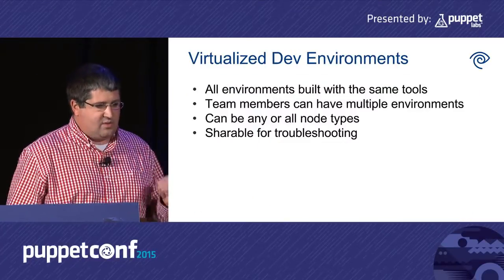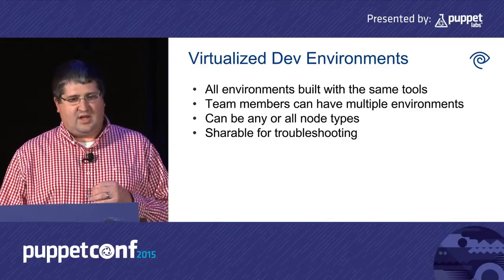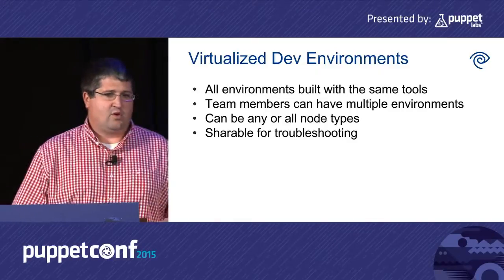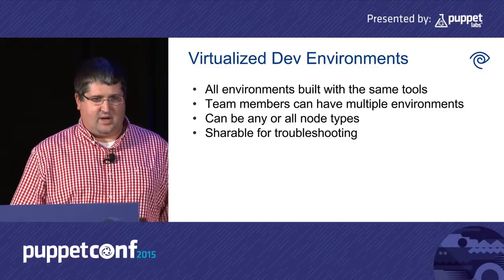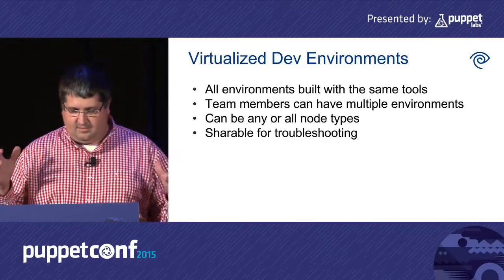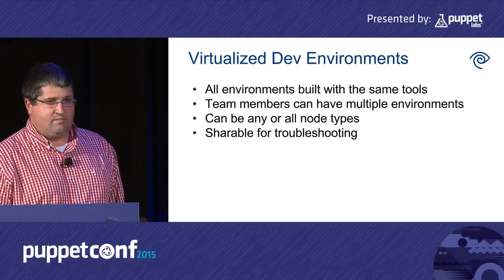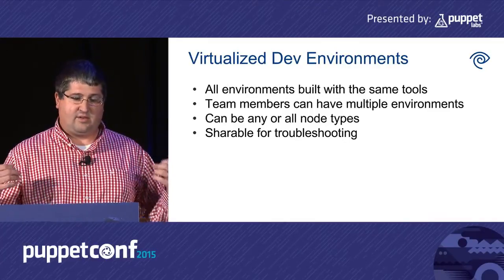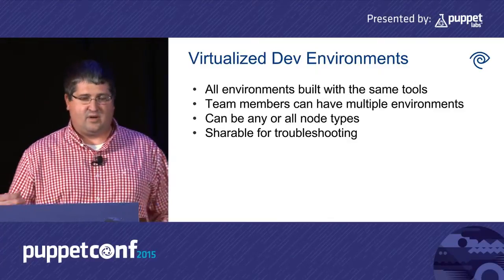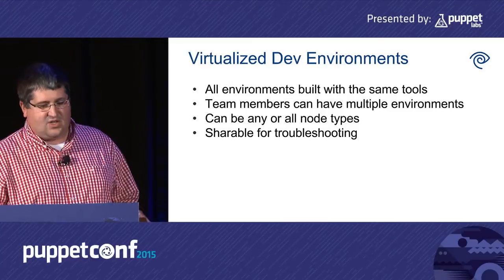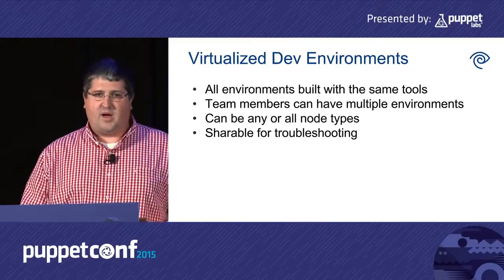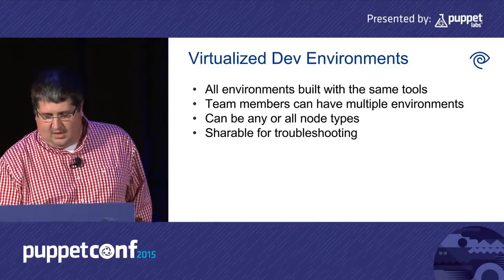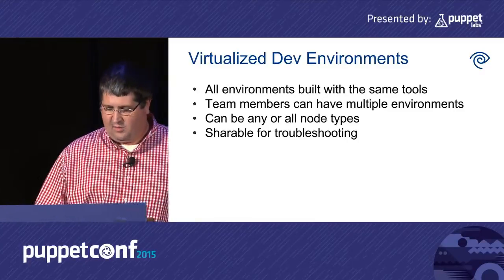We build these virtual environments with the exact same toolchain we'd use for hardware — the same scripting, Puppet, Ansible, et cetera. Every team member has their own environment, and you can pick and choose which node types you want. If you're only working on an identity server change, you spin up a puppet master and an identity server — you don't need the whole graph. You can have more than one environment at once, and you can create a virtual router to simulate multiple data centers. It's also very easy to share environments between team members. Once you've spun this up and written your code, the next step for us is code review.